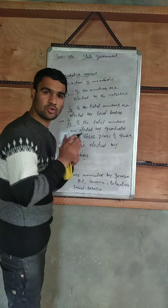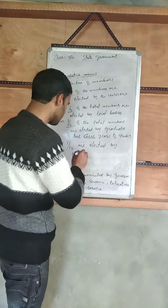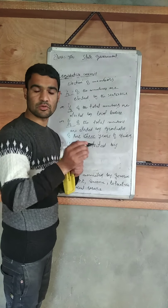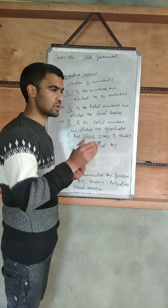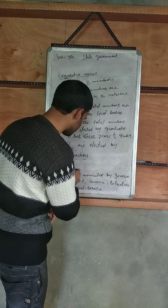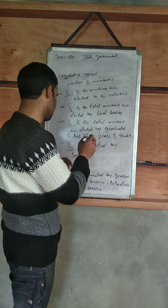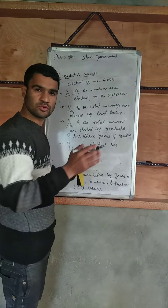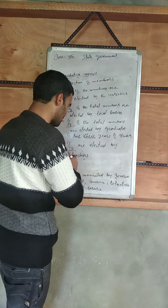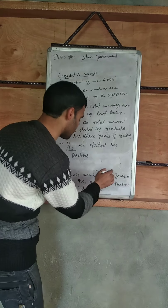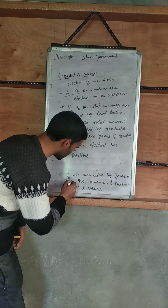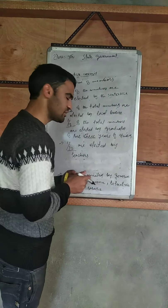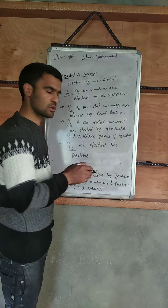One-twelfth of the total members are elected by teachers — but those teachers must have been serving for the last three years. As we have seen so far, those were all elected members. Now for nominated members: one-sixth of the total members are nominated by the Governor, but those nominees must have specialization in fields like art, science, literature, or social service.